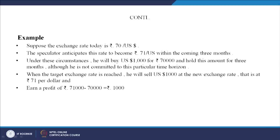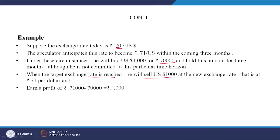Suppose the exchange rate today is 1 US dollar equals 70 rupees. The speculator anticipates this rate to become 71 - an increase of 1 rupee within the coming 3 months. Under these circumstances, he will buy 1000 US dollars for 70,000 rupees and hold this amount, although he is not committed to a particular time horizon - he may sell it just tomorrow if it reaches 71, or within 3 months. When the target exchange rate of 71 is reached, he will sell at the new rate and earn a profit of 1000 rupees. This is how speculators and participants in the forex market make their money.